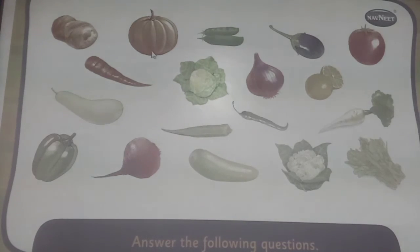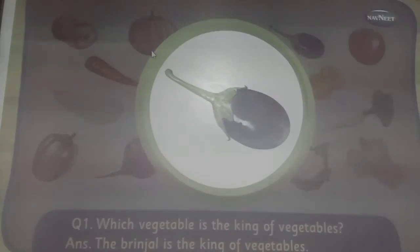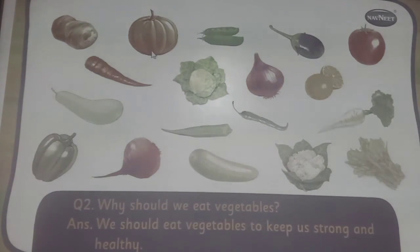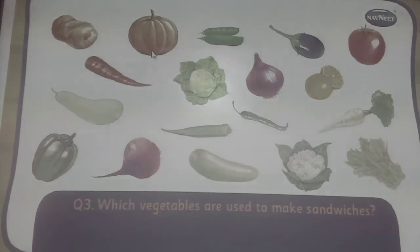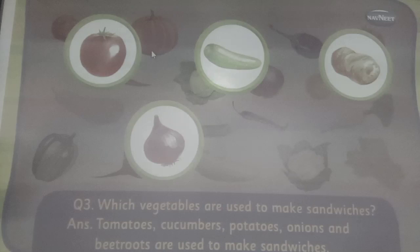Answer the following questions. Which vegetable is the king of vegetables? The brinjal is the king of vegetables. Why should we eat vegetables? We should eat vegetables to keep us strong and healthy. Which vegetables are used to make sandwiches? Tomatoes, cucumbers, potatoes, onions and beetroots are used to make sandwiches.